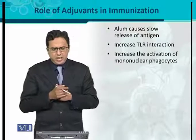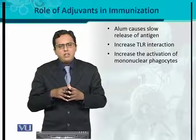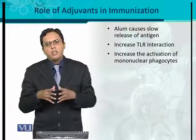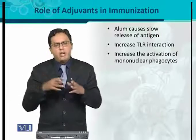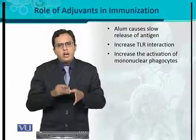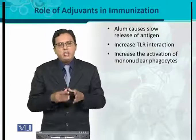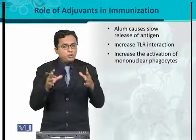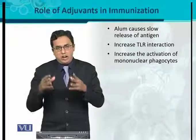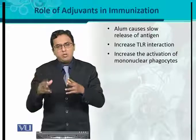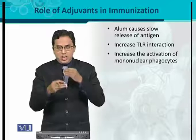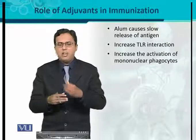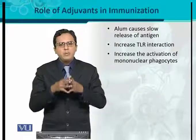Another important role of adjuvants is that they cause increased activation of mononuclear phagocytes. These are tissue-resident phagocytes in the blood, such as monocytes and macrophages. They are properly activated whenever the vaccine is used in conjunction with adjuvants. Adjuvants enhance the antigen and increase the activation of mononuclear phagocytes, which ultimately increases the immune response.